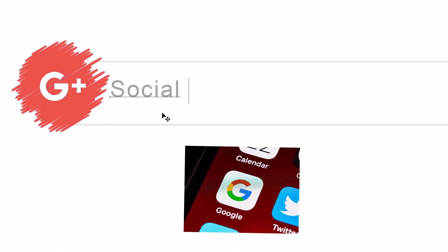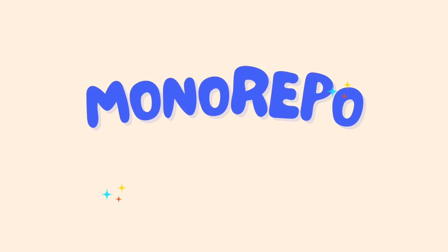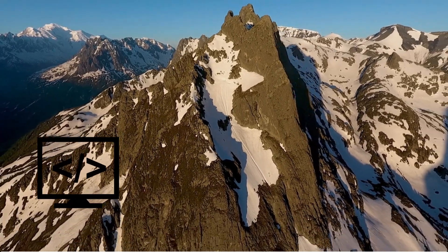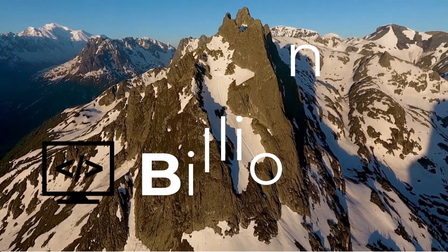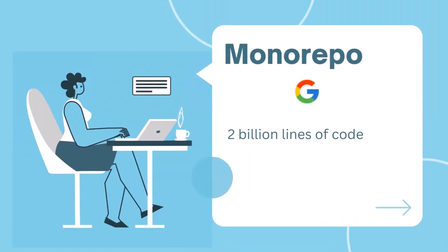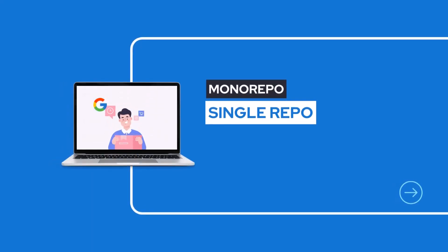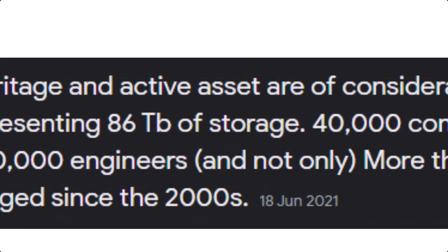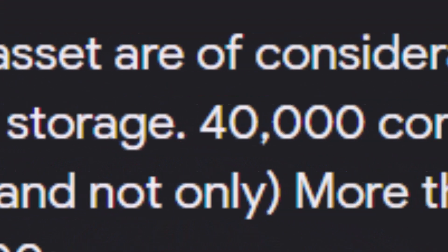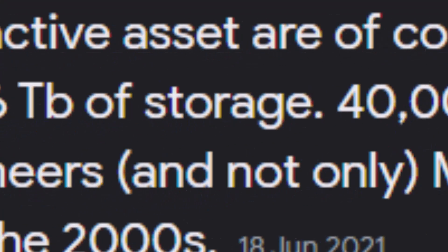Have you ever wondered how Google, one of the biggest tech giants, managed its code base? With MonoRepos. Imagine a single huge repository containing not just millions but billions of lines of code. With over 2 billion lines of code, Google does not scatter its code base into separate repos. Instead, they pack everything into one massive repository. It represents 86 terabytes of storage and 40,000 commits per day by more than 10,000 engineers.